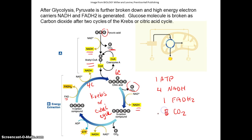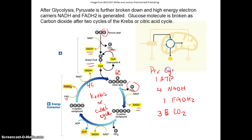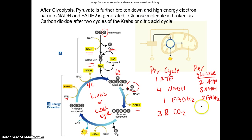Three CO2s per cycle — two cycles give you six carbon dioxide molecules total. Multiply by two because you have two pyruvate acids going into the cycle. Per glucose molecule: two ATPs, eight NADH, two FADH2, and six CO2. The sugar molecule is totally broken down, and all the energy is basically picked up by these electron carriers.